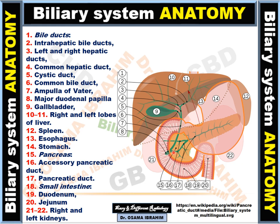The common bile duct connects with the main pancreatic duct before they enter together into the ampulla of Vater in the second part of the duodenum through the major papilla. Sometimes there are accessory pancreatic ducts called the duct of Santorini, which opens at the minor papilla, just above the major papilla site in the second part of the duodenum. The main pancreatic duct connected to the duct in the head of the pancreas opening at the major papilla is called the Wirsung duct.